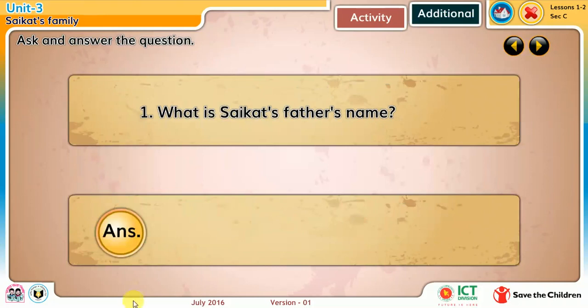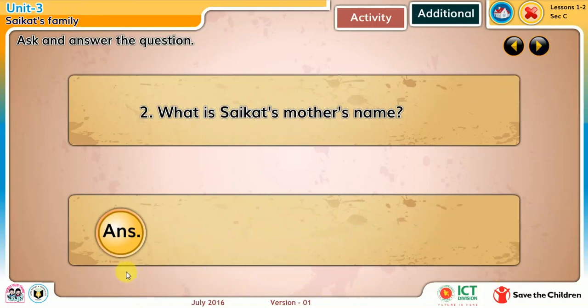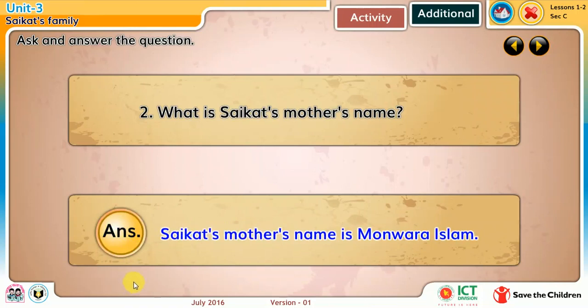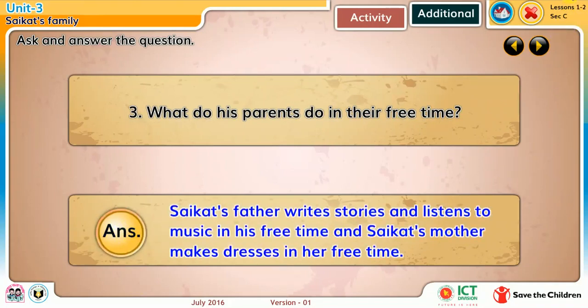1. What is Shoikot's father's name? Shoikot's father's name is Rashidul Islam. 2. What is Shoikot's mother's name? Shoikot's mother's name is Monwara Islam. 3. What do his parents do in their free time? Shoikot's father writes stories and listens to music in his free time, and Shoikot's mother makes dresses in her free time.